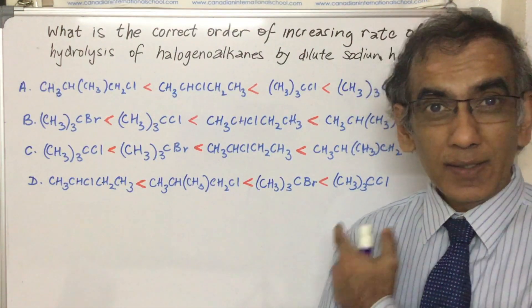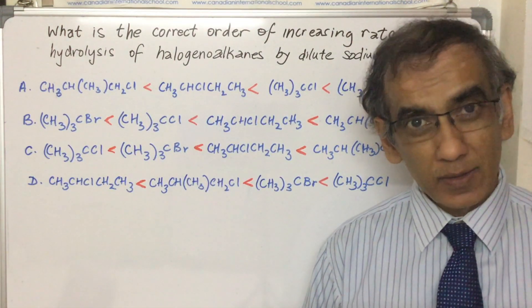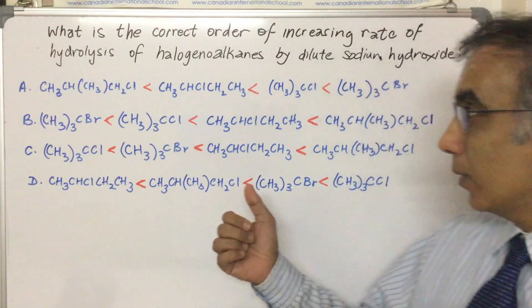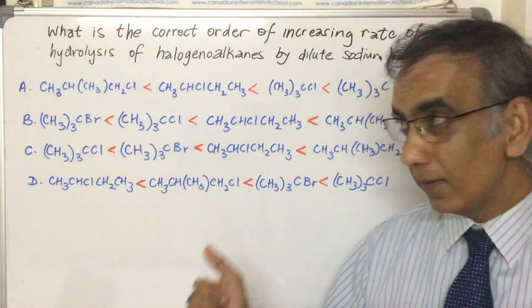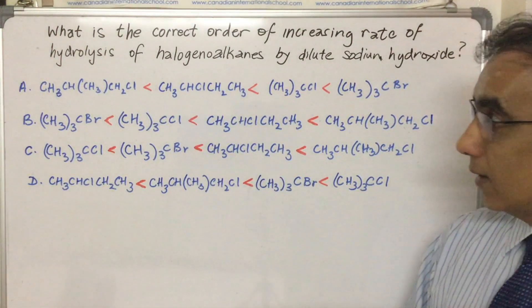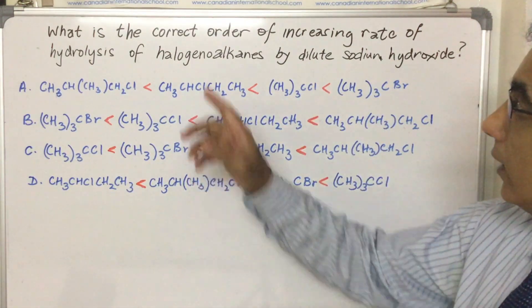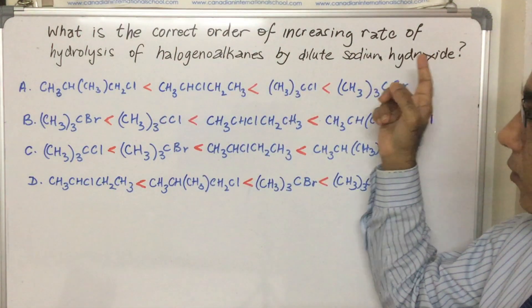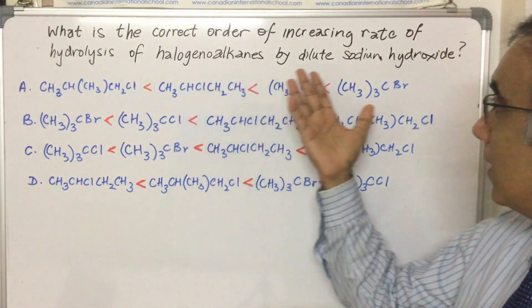Hello and welcome again as we consider yet another multiple choice question for IB Chemistry. This one dealing with Topic 20 for IB Chemistry and it says what is the correct order of increasing rate of hydrolysis of halogenoalkanes by dilute sodium hydroxide.